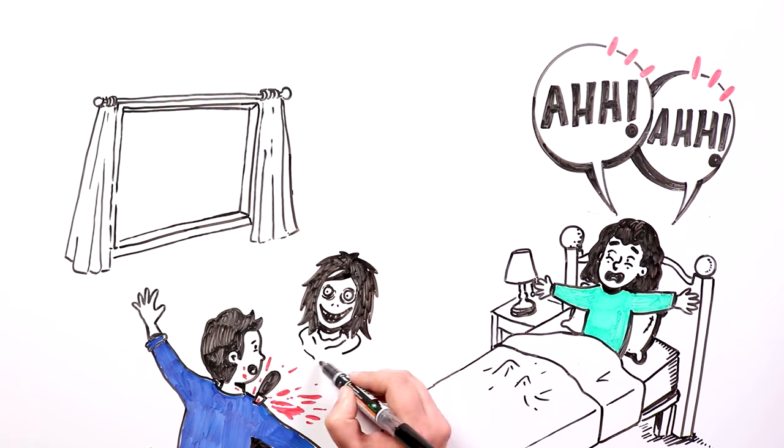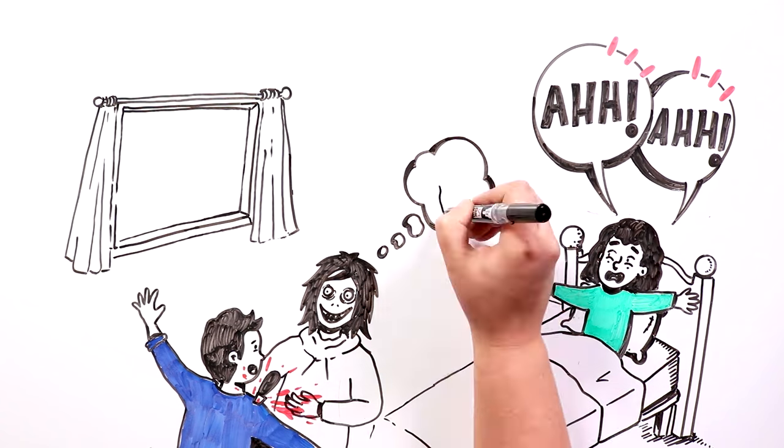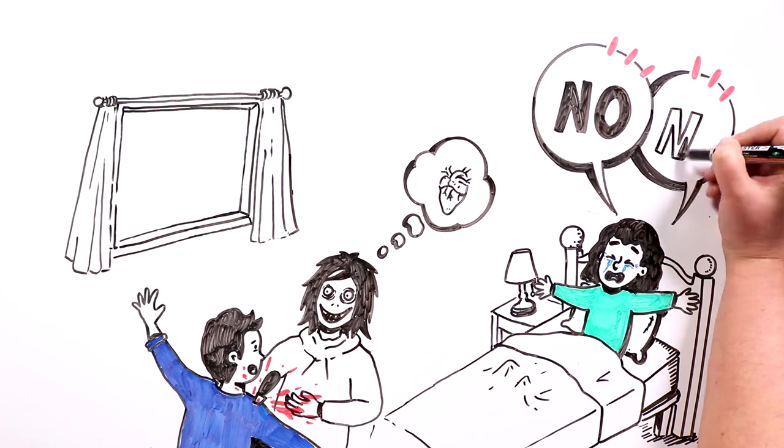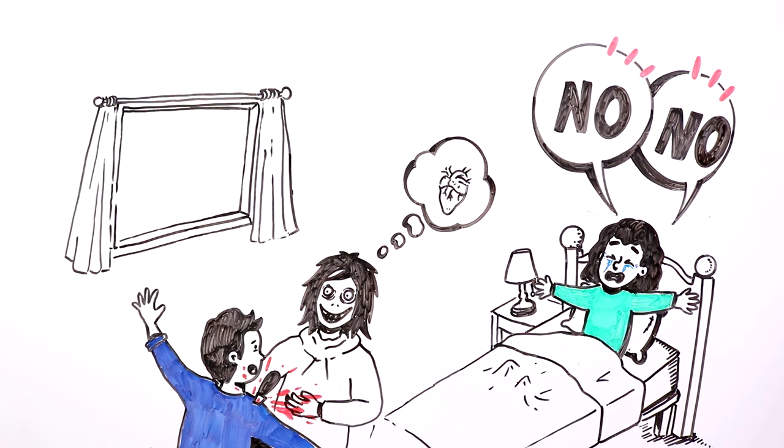Jeff approached the man with the intention of taking the knife out of his shoulder and then thrusting it into his heart. Maria, between screams and weeping, implored Jeff to not kill her father.